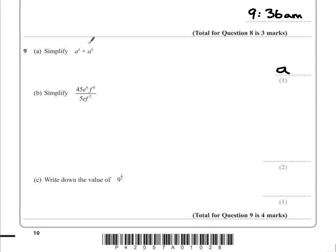What we do is we just add the powers together. So 4 add 5 is 9. So that's a to the power of 9.